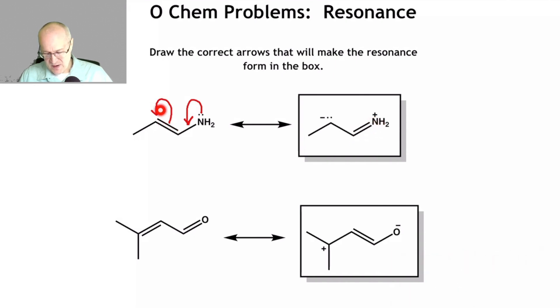The pi bond is moving up to the carbon with the lone pair here. So electrons push in, electrons push out. So those are the correct arrows to move to form that resonance form in the box.